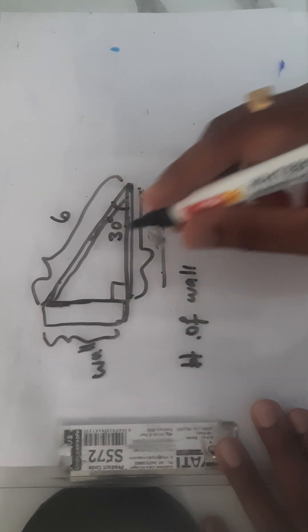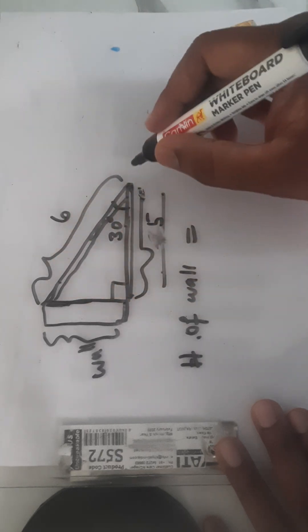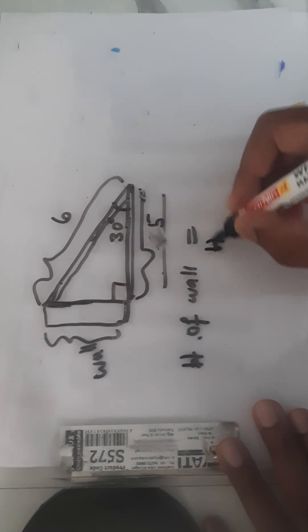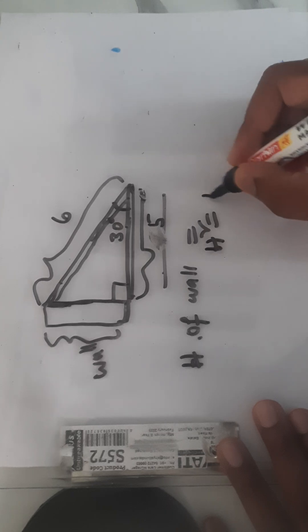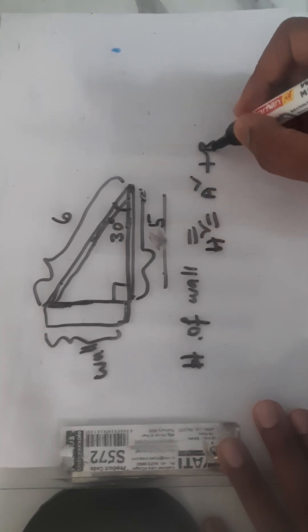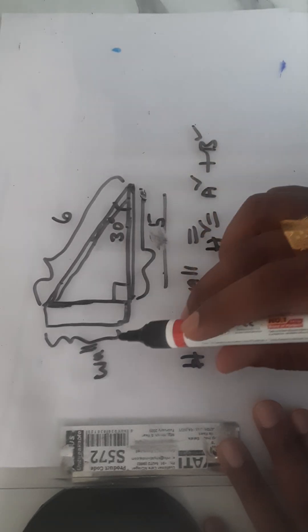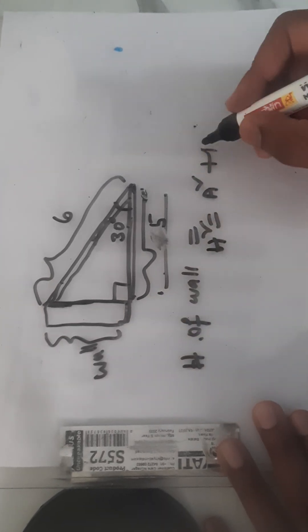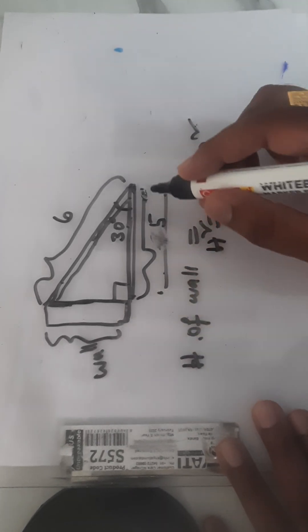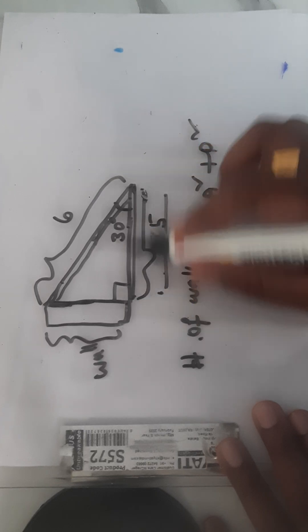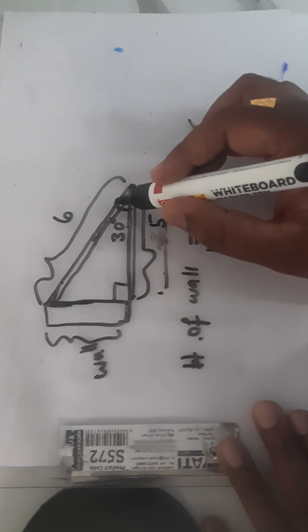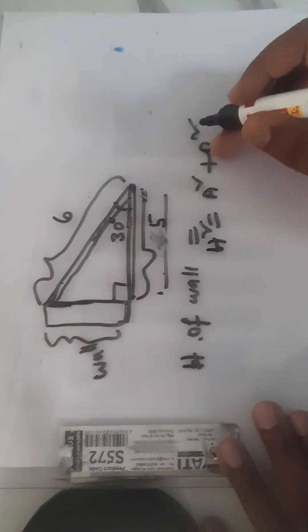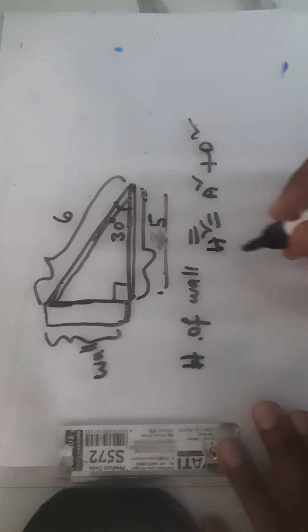The formula for hypotenuse is, this ladder is the hypotenuse. Hypotenuse formula is h square equal to a square plus b square. A square is the adjacent side, you can say o square for opposite. Adjacent side of this angle 30 degrees and opposite side is o. Adjacent side is a, opposite side is o.